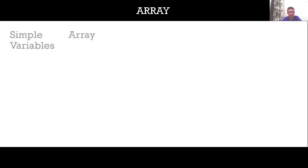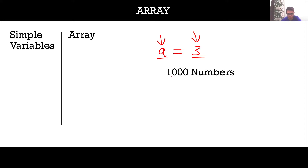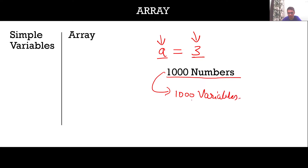Let us first understand the advantage of using an array over simple variables. With simple variables, a single variable can store a single value. So if we have to store 1000 numbers, then we would require 1000 variables, since a single variable can store a single number.